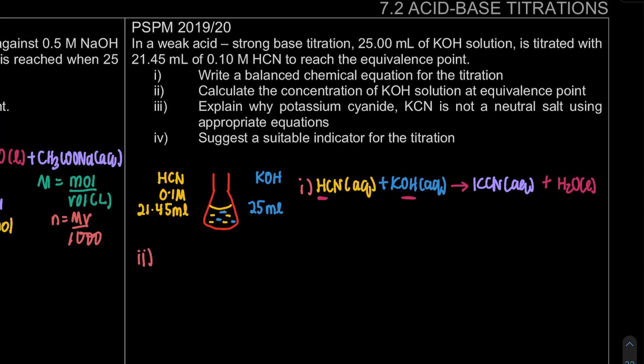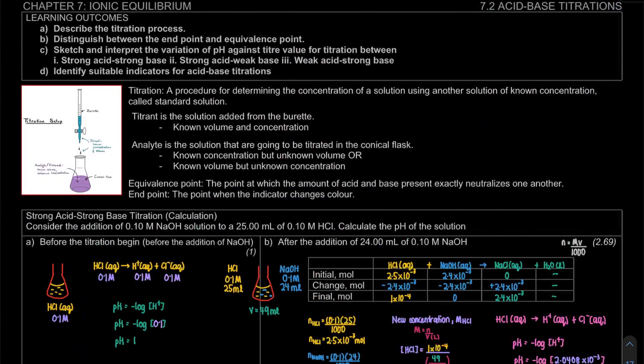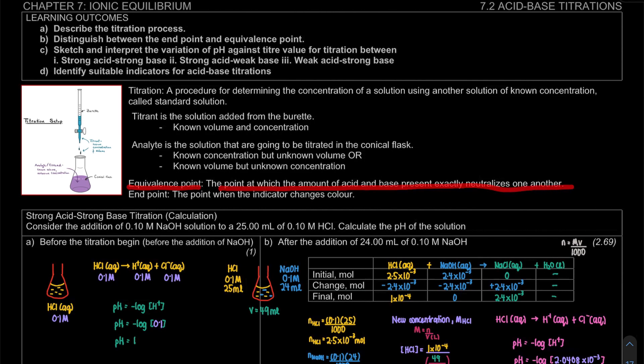Number two, question is to calculate the concentration of KOH solution at equivalence point. Again, concentration is actually our mole divided by volume, which must be in liter. But then the question is, the tricky part is actually at equivalence point. What is actually equivalence point? If we go back to the first page of 7.2, here, equivalence point is the point at which the amount of acid and base exactly neutralize one another.